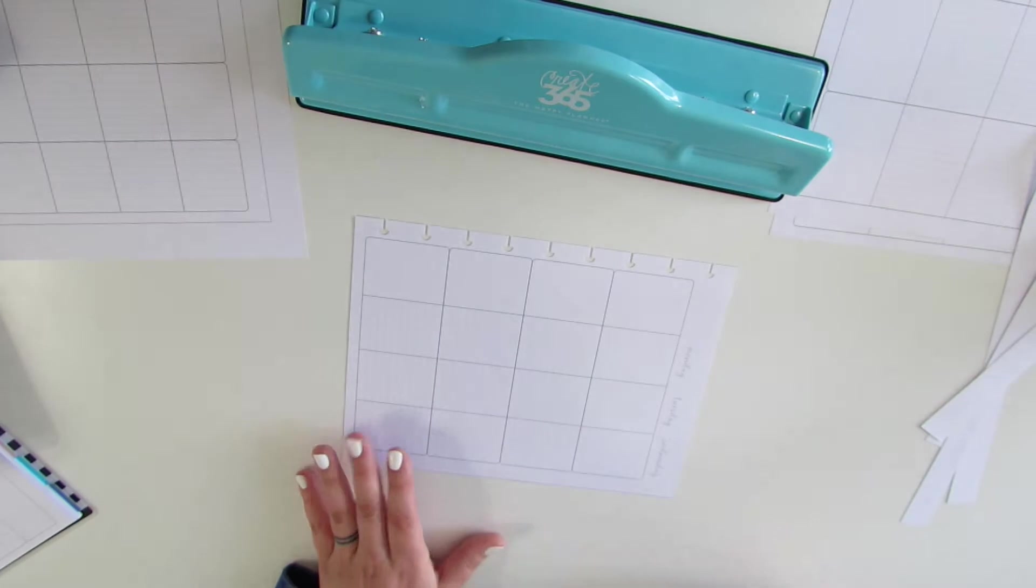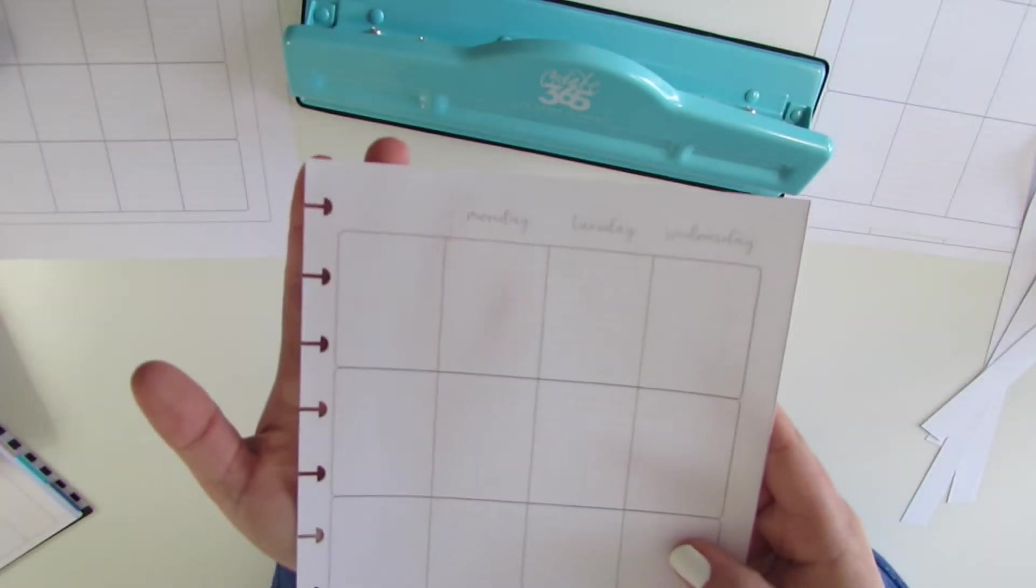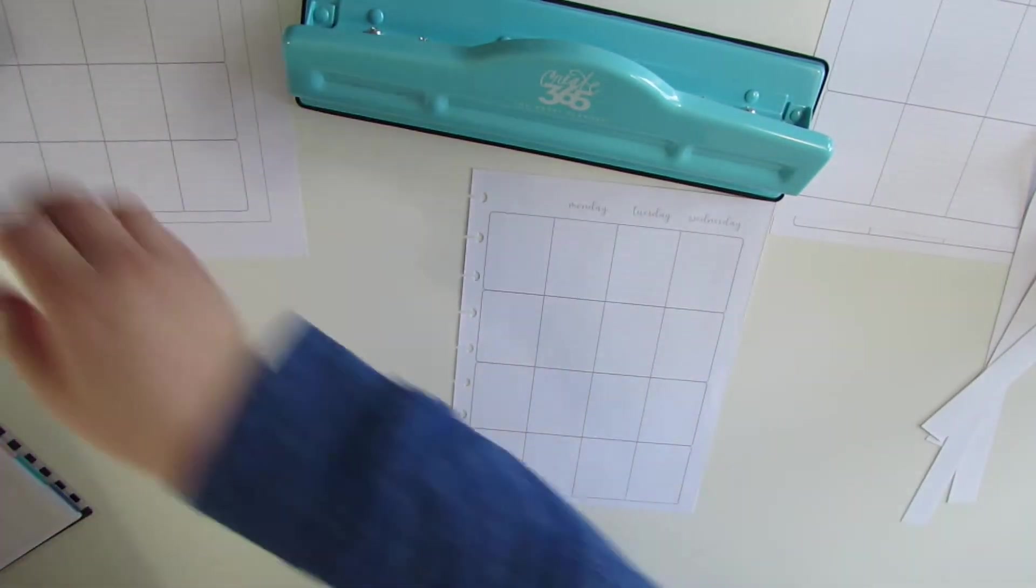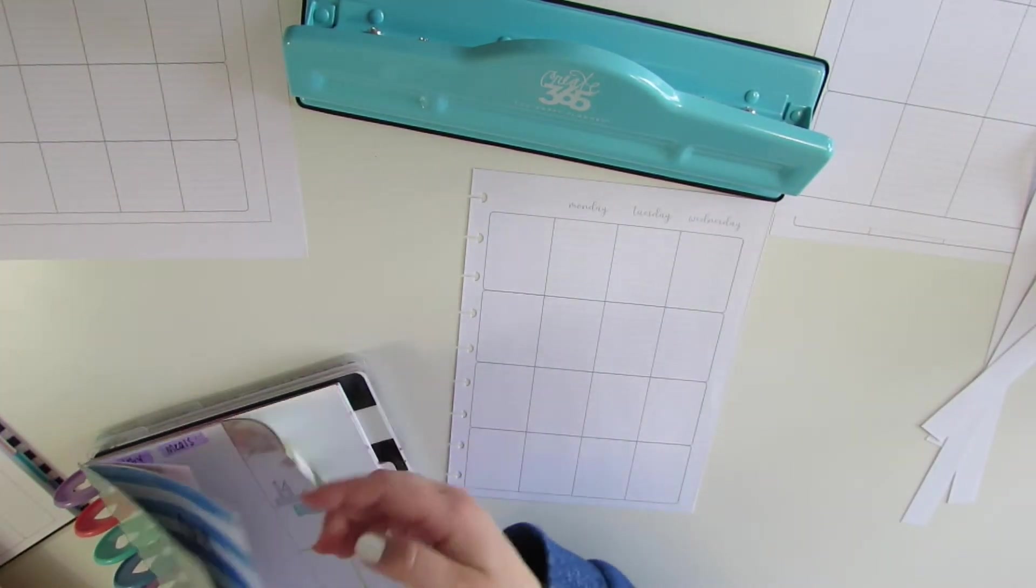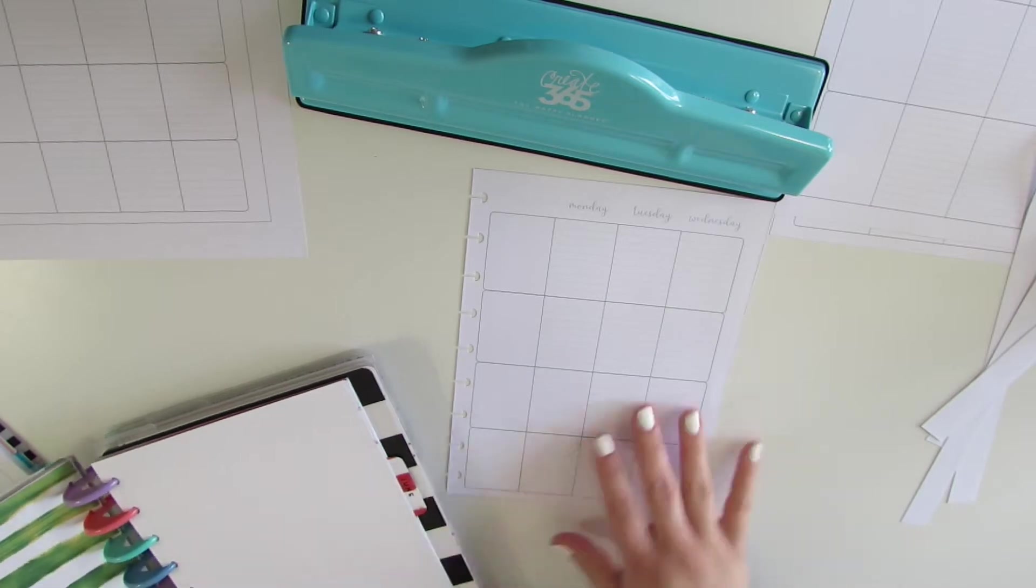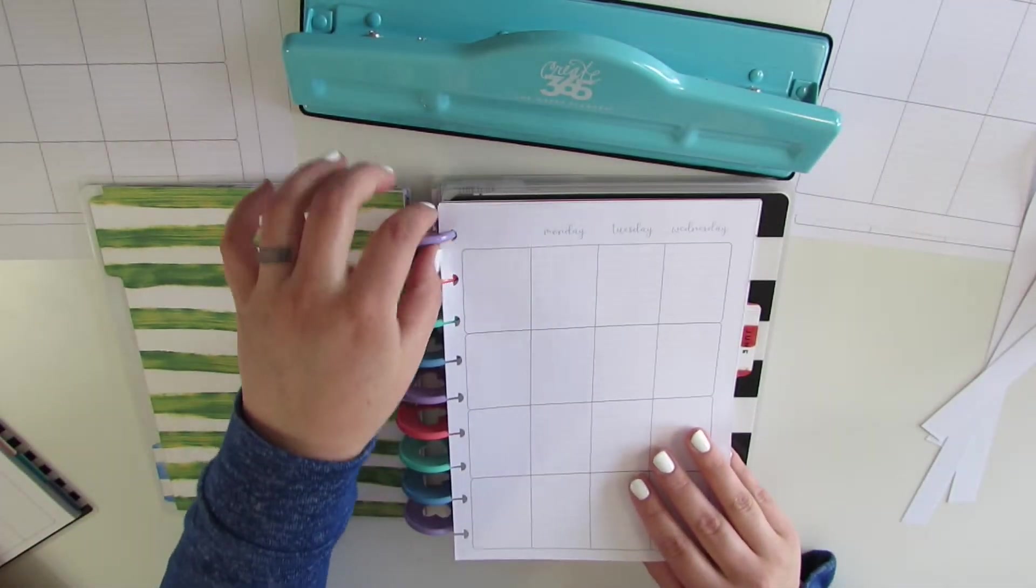Any punch that will get you the correct holes for a Disc Bound Planner will work. And then just pop it right into your Happy Planner.